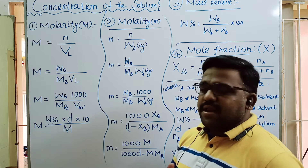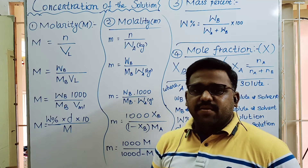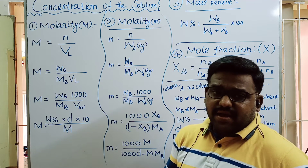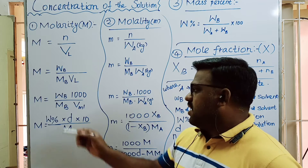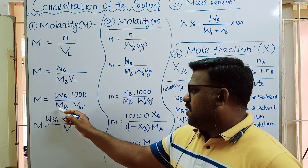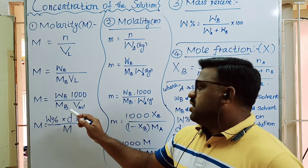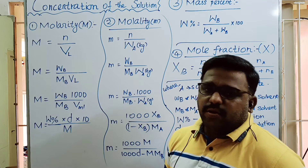Next, we will look at the formula in terms of milliliters. So the formula template for molarity becomes: given weight divided by molecular weight, multiplied by 1000 over volume in milliliters.